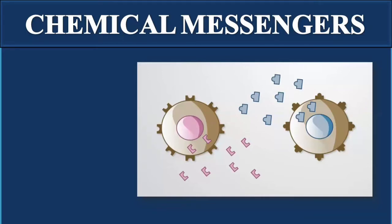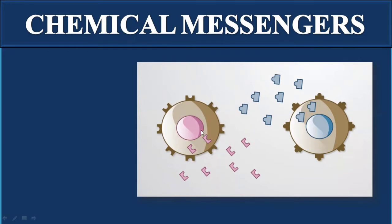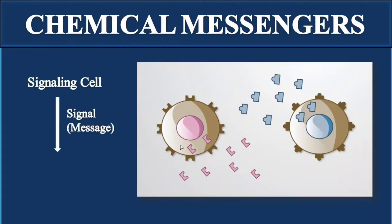In the human body, cells communicate through a specific mechanism using chemical messengers. The cell that sends the message by releasing chemical substances is known as the signaling cell or controlling cell. The cell that receives those chemical substances is known as the target cell, where specific functions are performed.